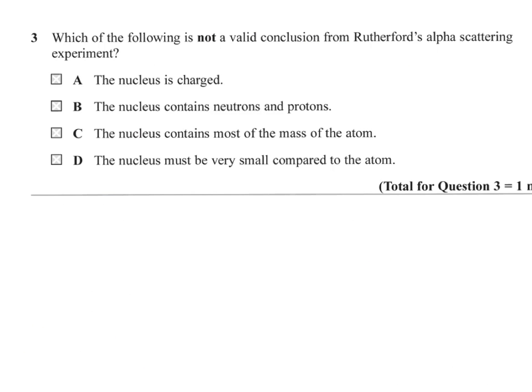Question 3. Which of the following is not a valid conclusion from Rutherford's alpha scattering experiment? The nucleus is charged. Remember, we're looking for the things that aren't true. Nucleus is charged. Yeah, nucleus contains neutrons and protons. Nucleus contains most of the mass of the atom. That's definitely from Rutherford's. And the nucleus is very small. Rutherford's experiment does not tell us about the contents of the nucleus. Only that it's charged. And it's small. And that it has most of the mass. So, it's B.